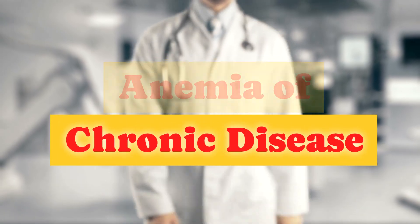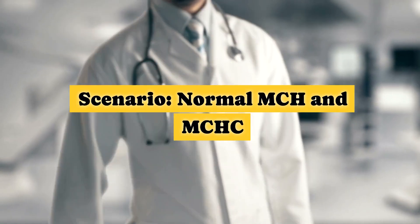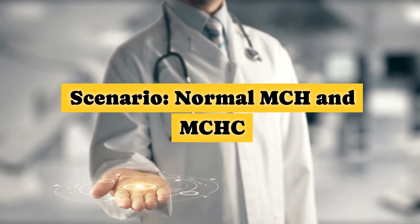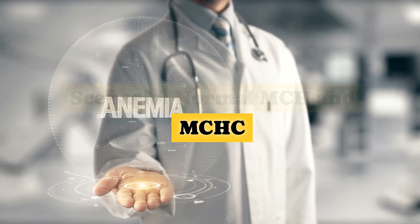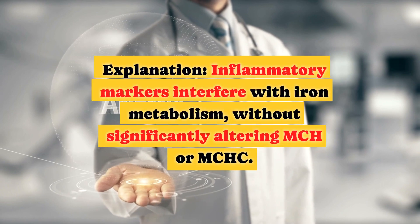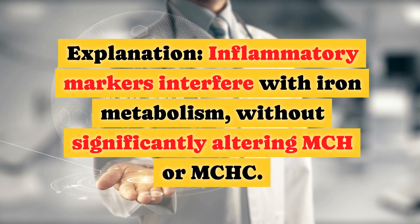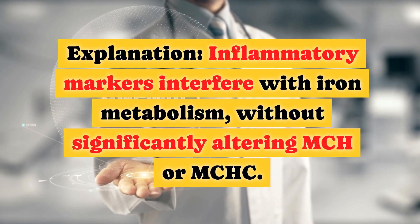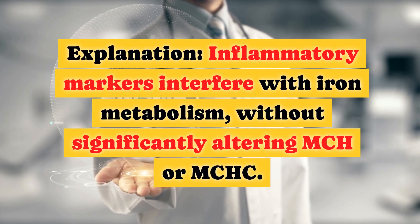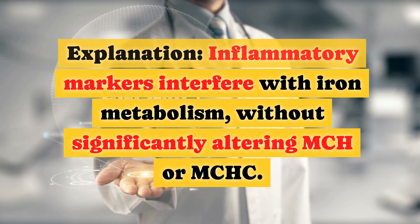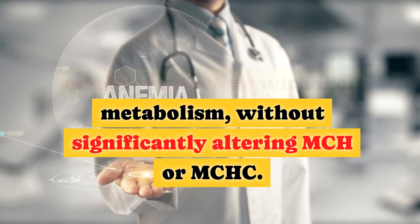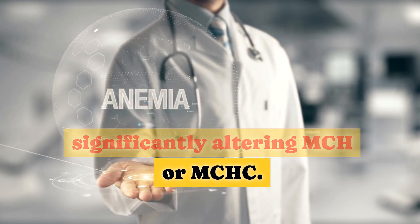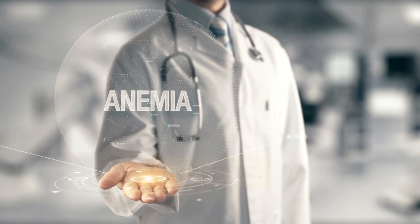Anemia of Chronic Disease Scenario — Normal MCH and MCHC. Inflammatory markers interfere with iron metabolism without significantly altering MCH or MCHC.